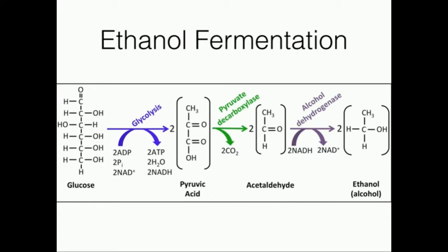Glycolysis is absolutely dependent on NAD. To run glycolysis, you have to have NAD. And if you're under anaerobic conditions, glycolysis is the only pathway that you're really doing — so glycolysis had better be working. If you can't regenerate NAD through the electron transport chain, you have to have some other way to regenerate NAD. Fermentation's function in any case is to regenerate NAD for the continuation of glycolysis.